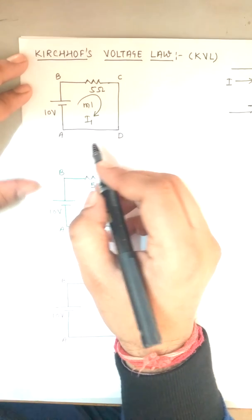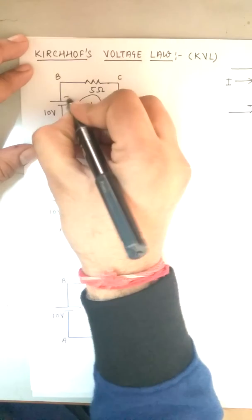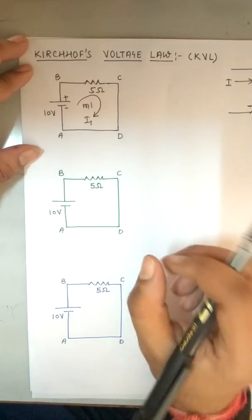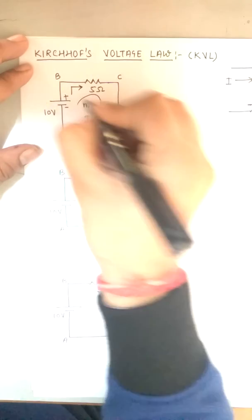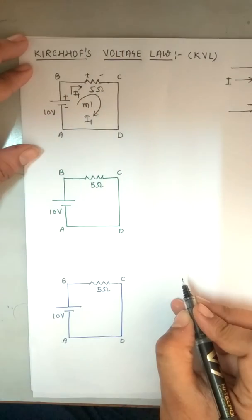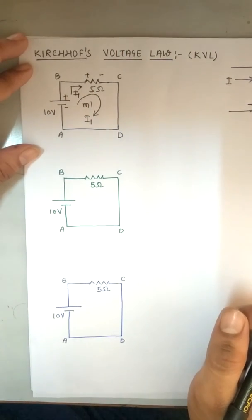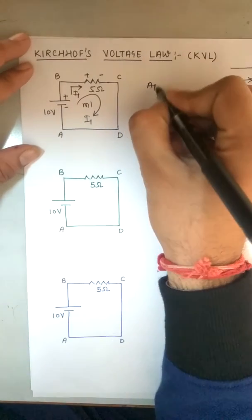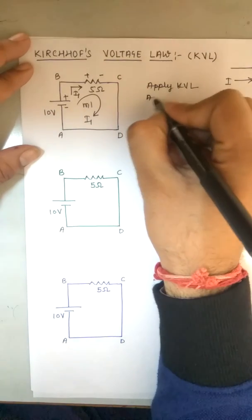In this simplest problem, mark the polarity on each element except the current source. The positive and negative terminals are marked accordingly. Since current is entering from this side, the branch current is I1, so this terminal is positive and the other is negative. We show the terminal polarity on each element.